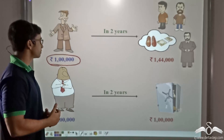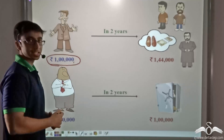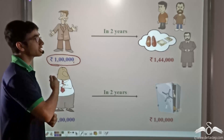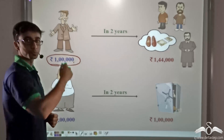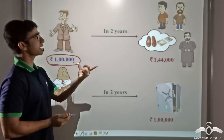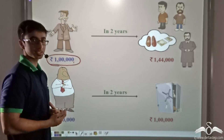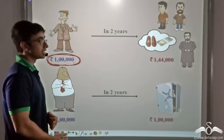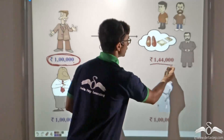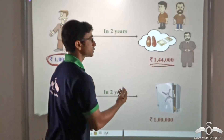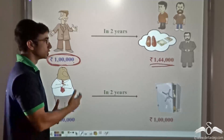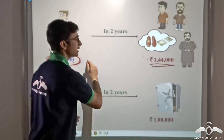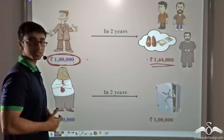As we saw in previous cases, when Narayan is either investing in the show business or giving out money to friends, in a span of two years where he had given out rupees one lakh, he is able to earn back rupees one lakh 44,000. So his money has grown by 44,000 rupees.